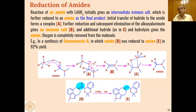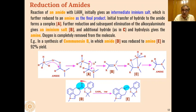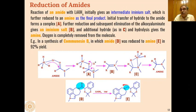An example is the synthesis of cumnesin B, where an amide group is reduced to a CH₂ group by LAH — amides are converted into tertiary amines in this case.